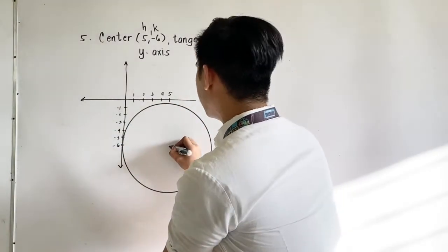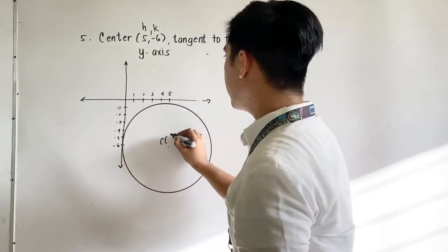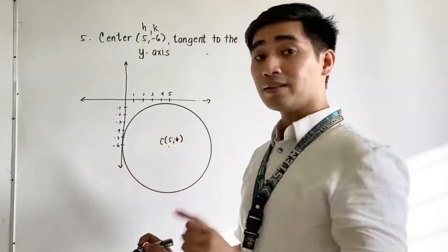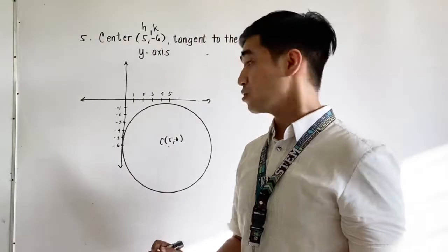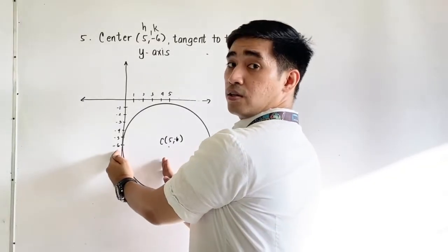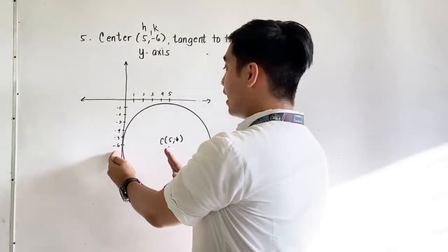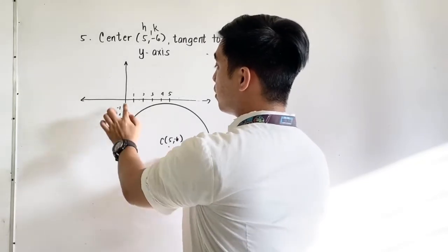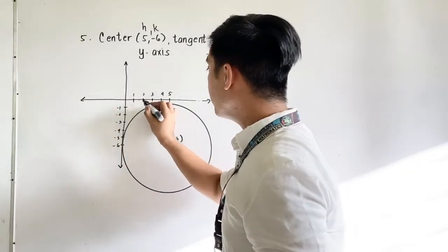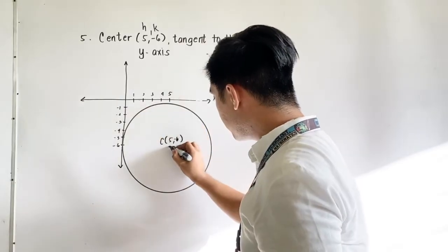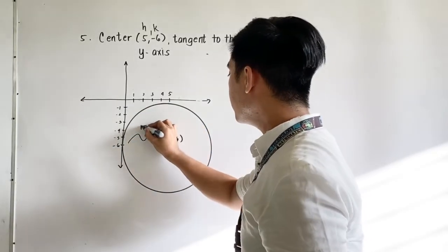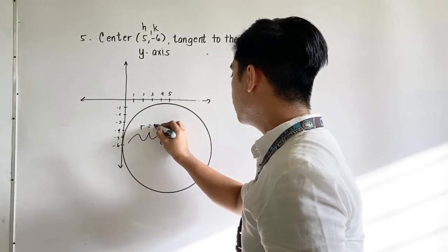We now draw the circle. This is our circle having the center located at 5 and negative 6. But what is the radius? All you have to do is count the x distance, and the x distance is from 0 to 5 — that is 1, 2, 3, 4, 5. Therefore, r is equal to 5.